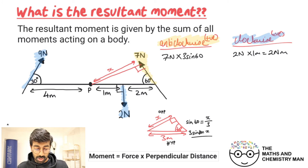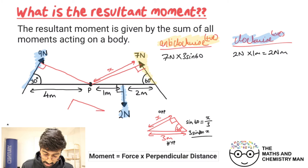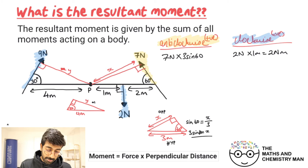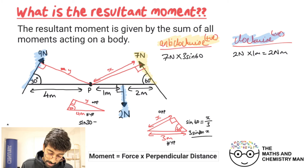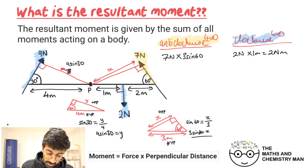The nine Newton force is at an angle again, so we draw in a perpendicular distance, creating another right angle triangle. In this triangle the hypotenuse is four meters, the angle is 30 degrees, and we call the perpendicular side y. Using sine: sine 30 equals opposite over hypotenuse, giving y equals 4 sine 30. So to find the moment from the nine Newton force, we do nine Newtons multiplied by 4 sine 30.